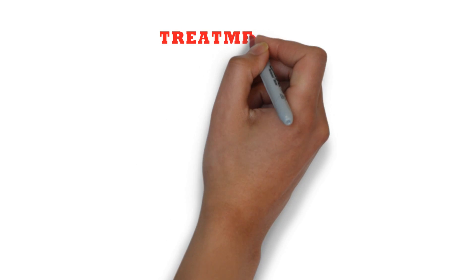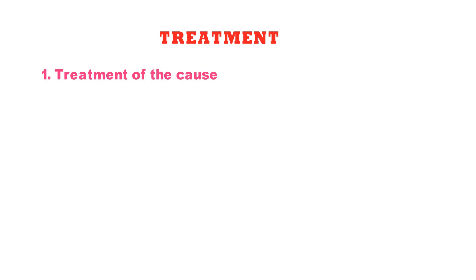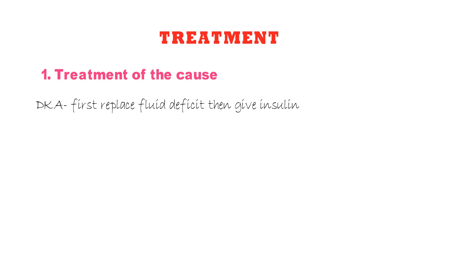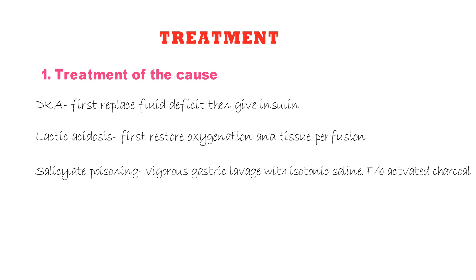Now the last topic is how to treat metabolic acidosis. The primary aim should be treatment of the underlying cause — that is why knowing all the causes is essential. Specific therapy should be done first: in diabetic ketoacidosis, first replace the fluid deficit followed by insulin; whereas in lactic acidosis, first restore adequate oxygenation and tissue perfusion.